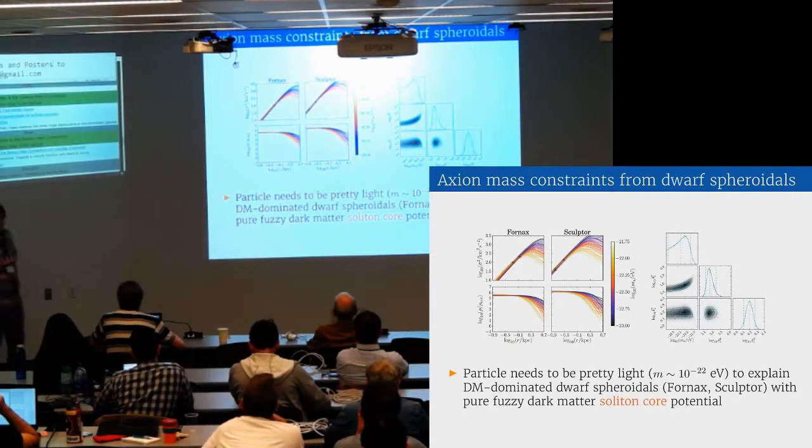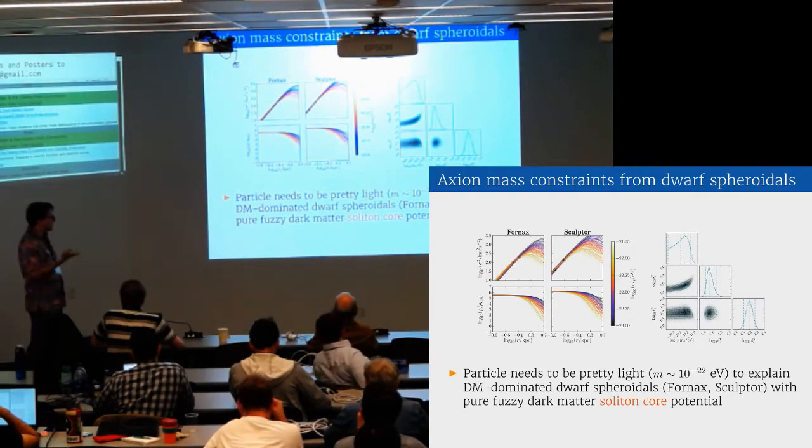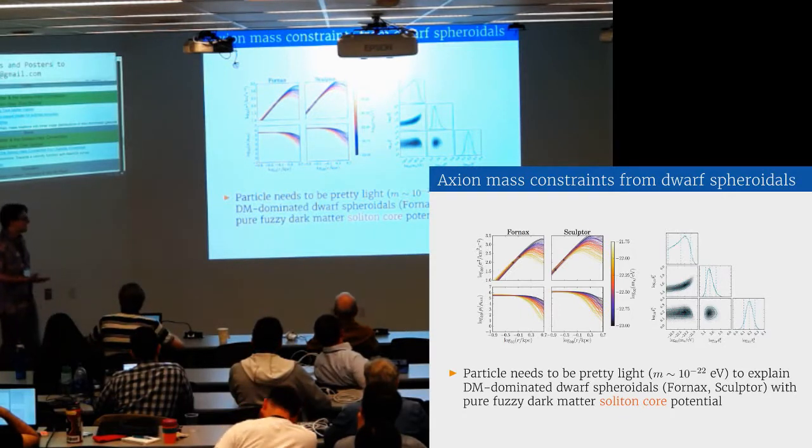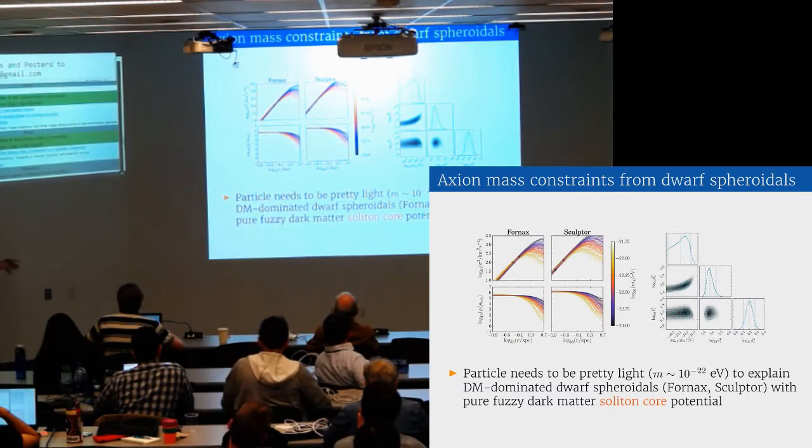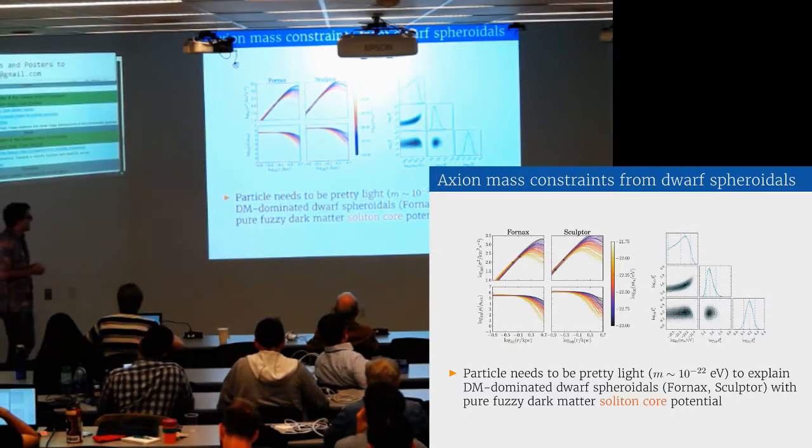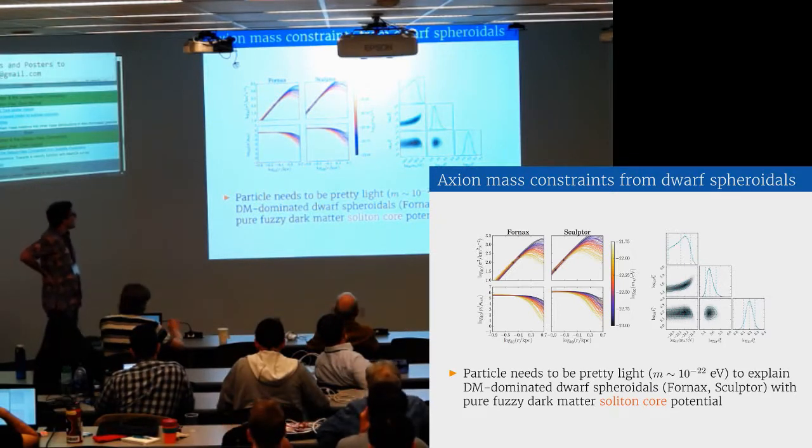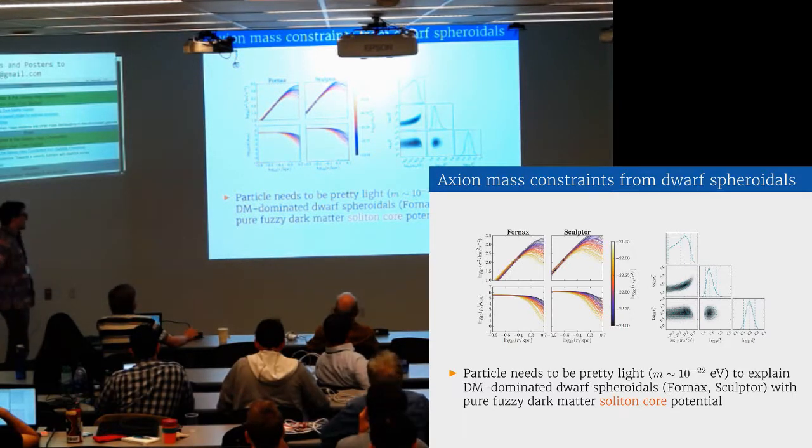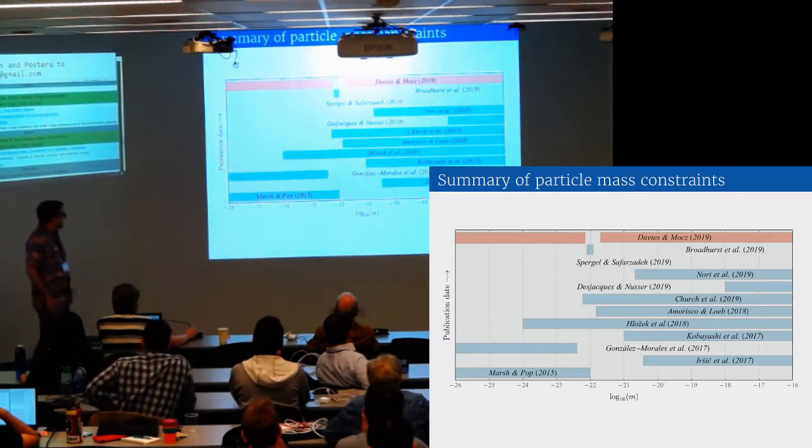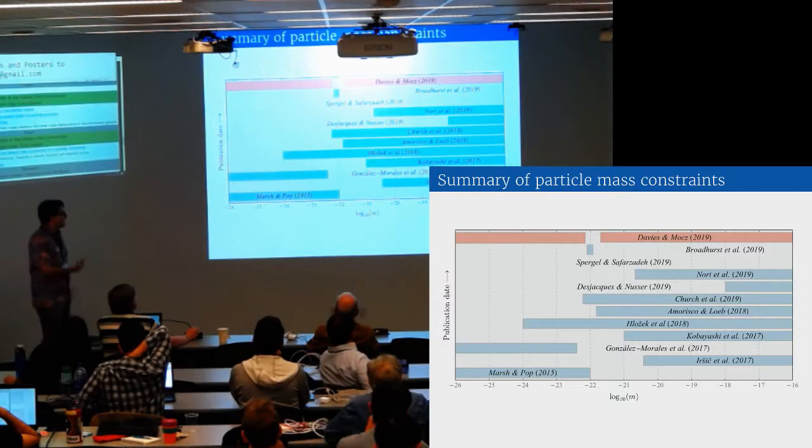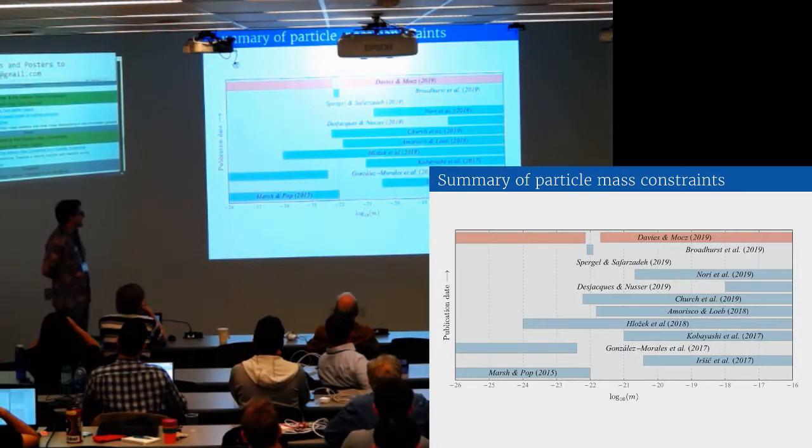Fuzzy dark matter has also been applied to studying the potentials of dwarf spheroidal galaxies, such as Fornax and Sculptor, which are very cored. It's hard to explain this structure in the theory of lambda CDM. When you model the velocity dispersion of the stars in one of these soliton cores, then you can fit for the axion mass and the soliton core radius. This data prefers axion masses of around 10 to the minus 22 eV. So you see that there's already a little bit of tension in what some of the different constraints give you.